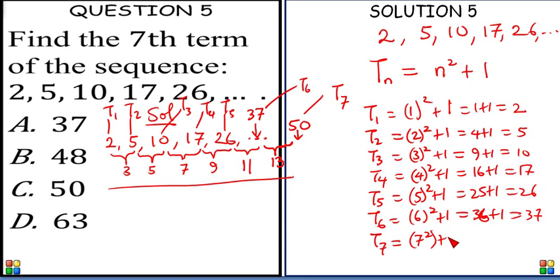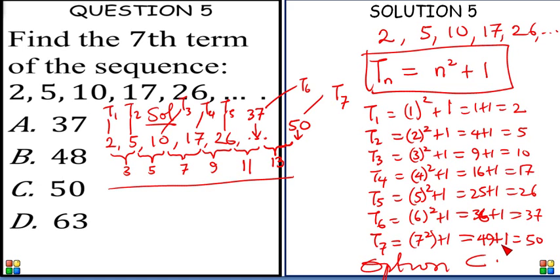And the next term, term 7, is going to be 7 square plus 1, which is equal to 49 plus 1, and that gives us 50. So we can see from here that the seventh term is 50. If you are able to think of this formula very easily, the correct option is option C.